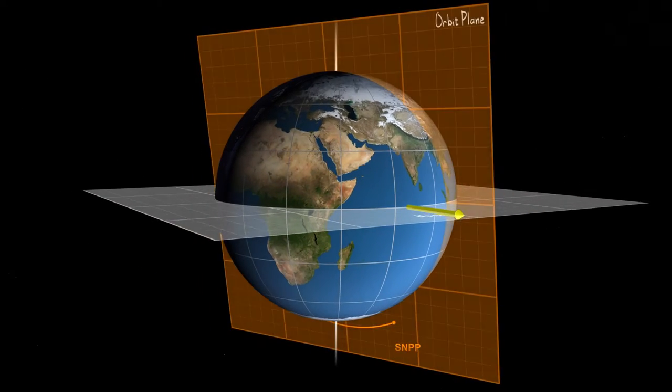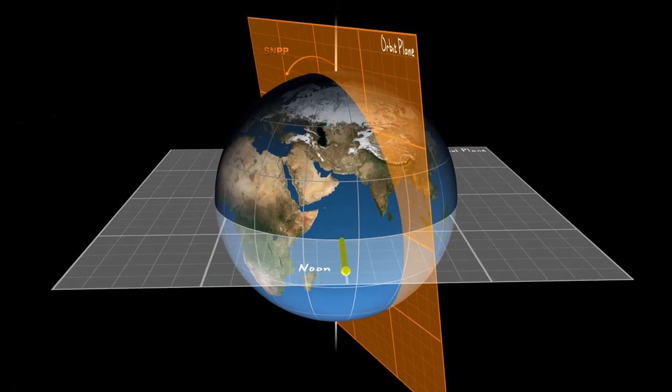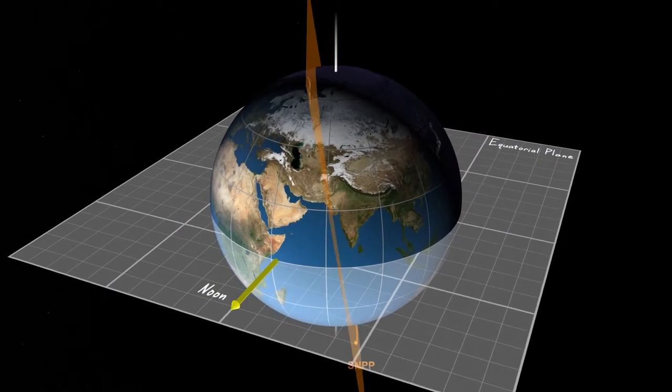The orbit plane for JPSS is shown in orange. We can see how that orbit plane intersects the gray equatorial plane.